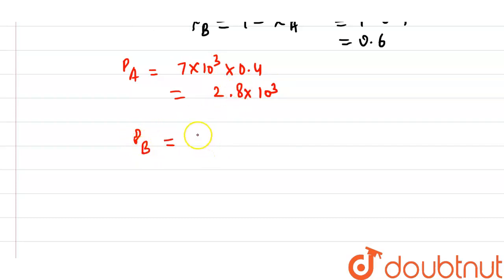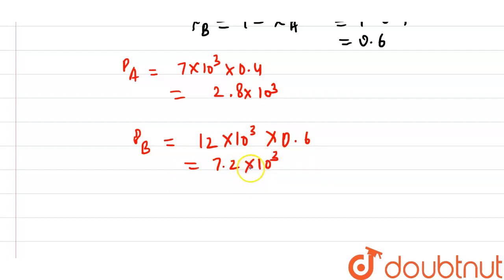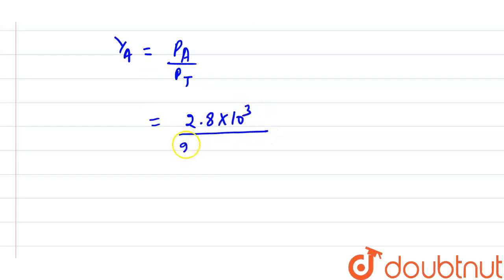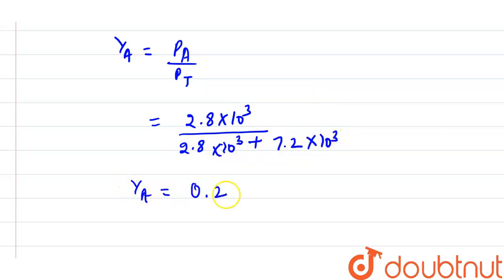P_B = 12×10³ × 0.6 = 7.2×10³ Pascal. Now using the formula y_A = P_A / P_T, we get y_A = 2.8×10³ / (2.8×10³ + 7.2×10³), which gives y_A = 0.28.